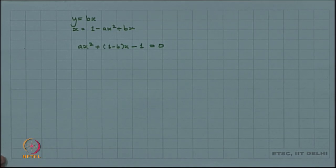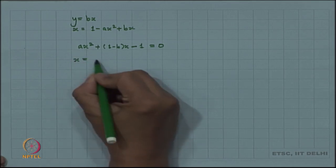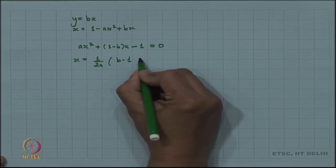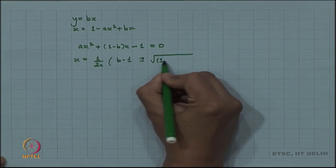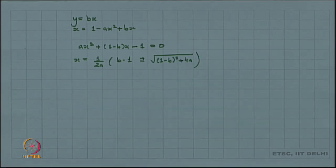This quadratic equation has two solutions: x = (1/2a)[(b-1) ± √((1-b)² + 4a)]. This gives the fixed points of the Hennon map. Given fixed values of a and b, we get these fixed points. Whether the Hennon map has real fixed points depends on the relation between a and b.